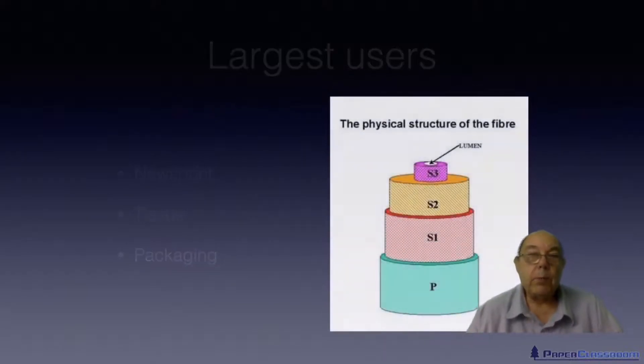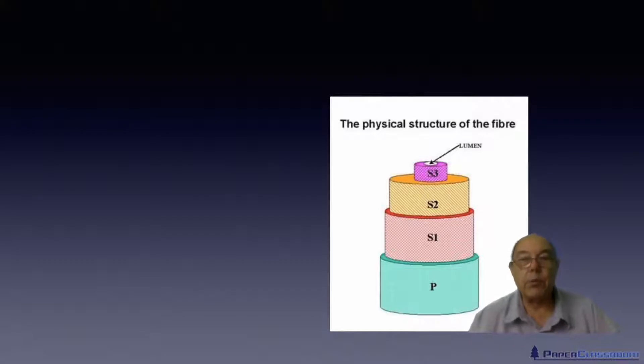Okay, so we're going to talk today about what happens to a fiber once it's been made or as it's being made into a sheet of paper. So this is a nice simple pictorial example of a fiber. So all fibers, all natural fibers, consist of these four walls.